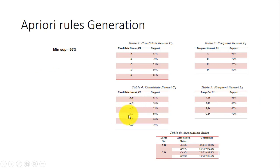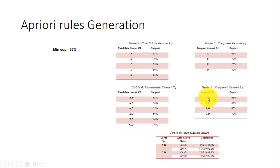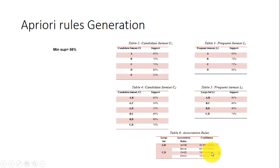The combinations AC and AD have support values below the minimum threshold and are discarded. If a candidate set 3 generation is possible it is performed; otherwise it is not. The finalized values are then used to generate association rules for item sets with the highest support count. AB has the highest support count at 65% and CD has 70%. The association rules generated are: A implies B with confidence 100%, B implies A with confidence 92%, C implies D with confidence 93%, and D implies C with confidence 87.5%.